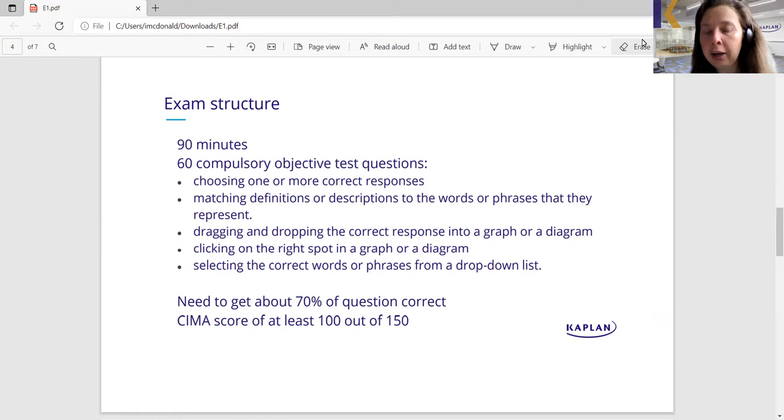So if it's your first CIMA exam, the general rule of thumb is that you need to get about 70% of the questions correctly to pass. But when you get your scores, CIMA uses a scale of 150 to determine whether the student is successful or not. So if you get a score of at least 100 out of 150, you have passed this exam.